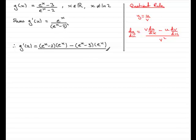It's all divided now by the bottom of the fraction, all squared. The bottom of the fraction is e^x minus 2, so we're going to have (e^x - 2) all squared.